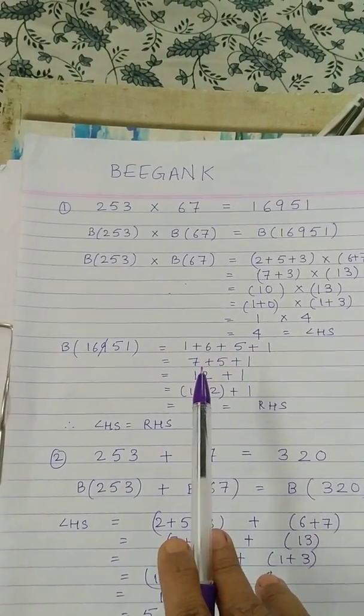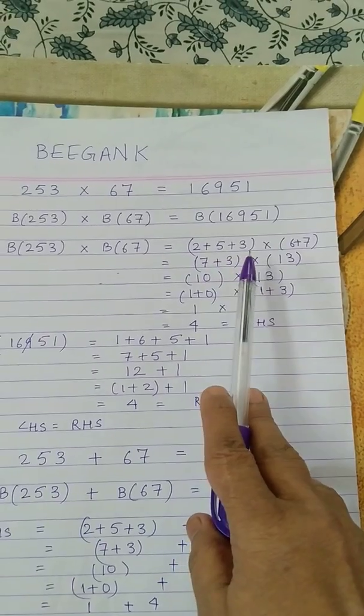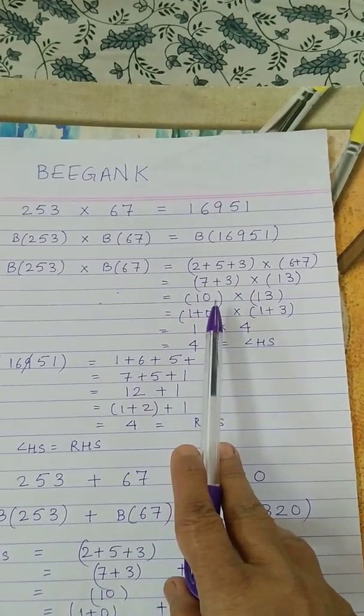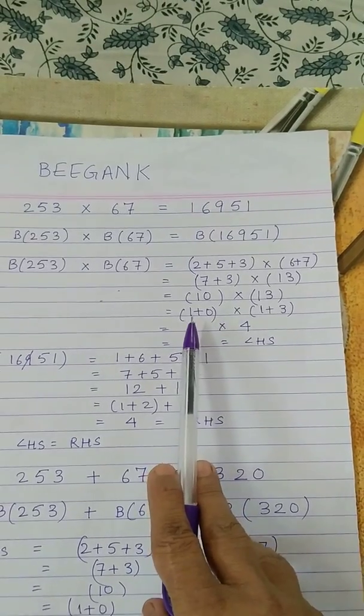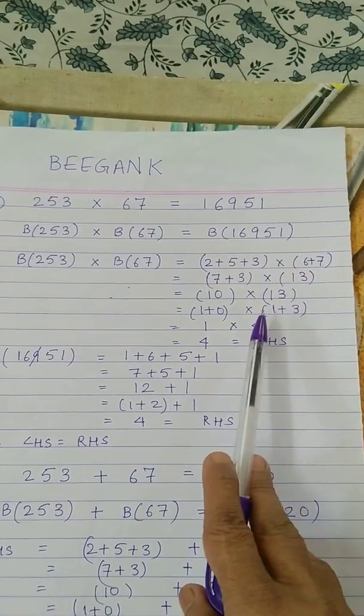Beejank or the digital root means you simply add the digits of that number. So 2 plus 5 plus 3, that is 7 plus 3. The moment you get a two-digit number, you reduce it to 1. So we get 1. 6 plus 7, 13, 1 plus 3, so 4.